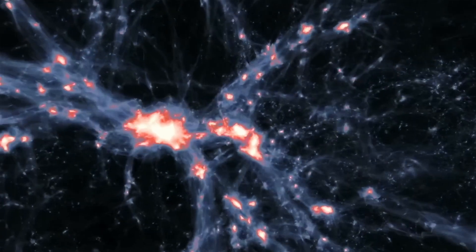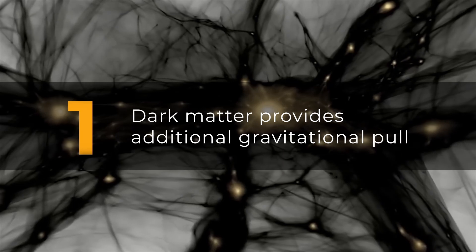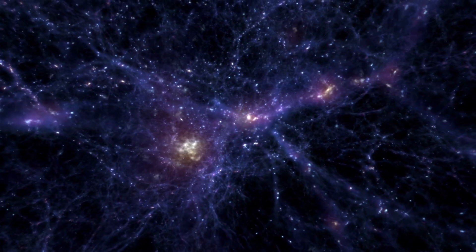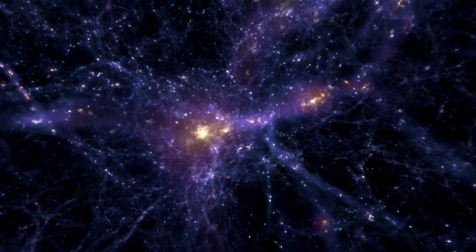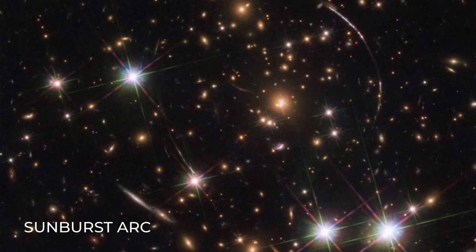However, dark matter's gravitational effects are more significant, providing an additional gravitational pull on the visible matter in the galaxy. Ordinary matter clumps together due to its interactions with other particles, forming structures such as stars, galaxies, and galaxy clusters.